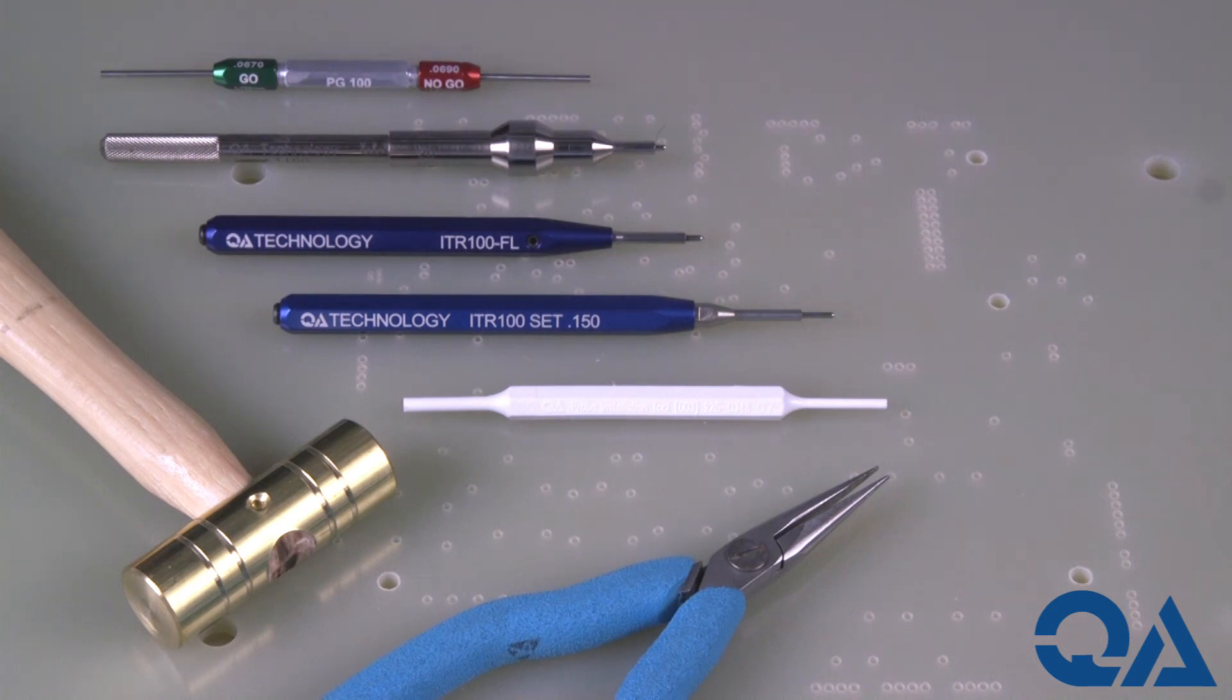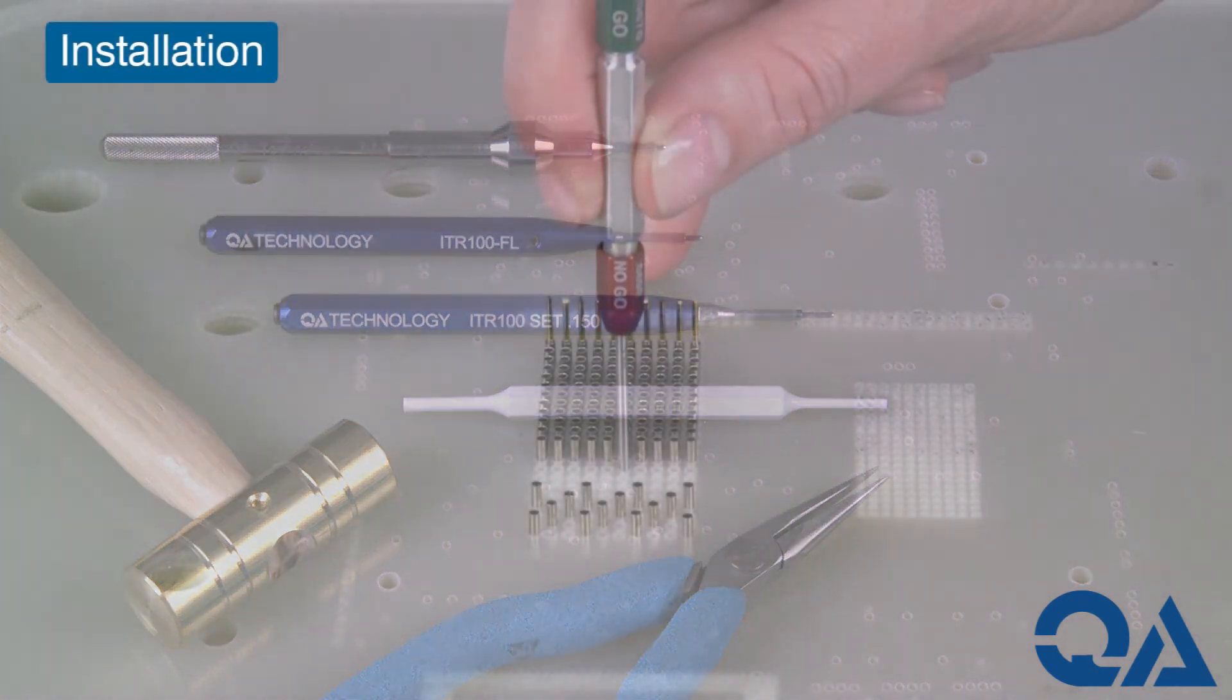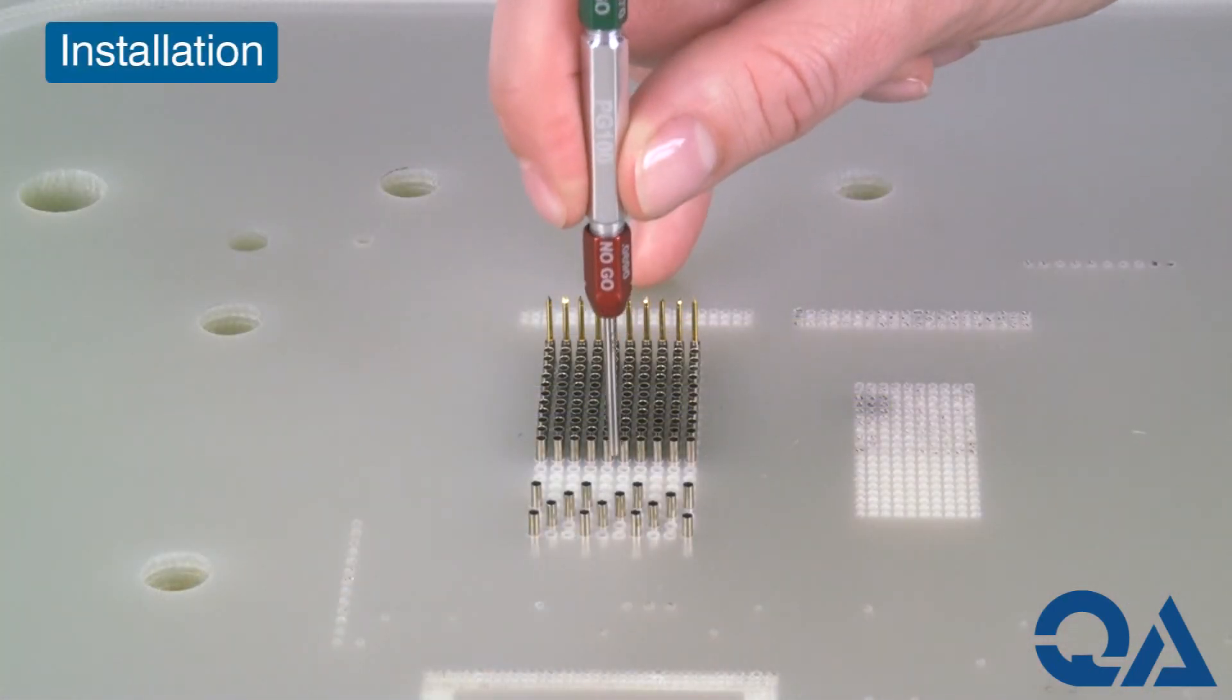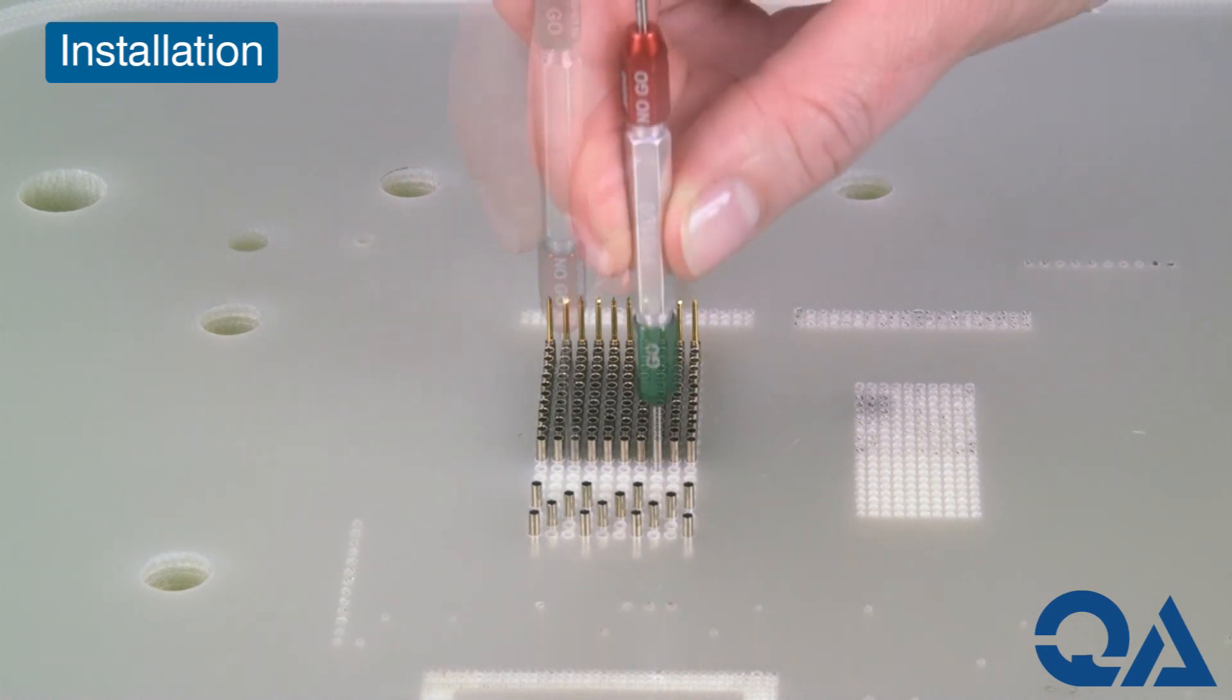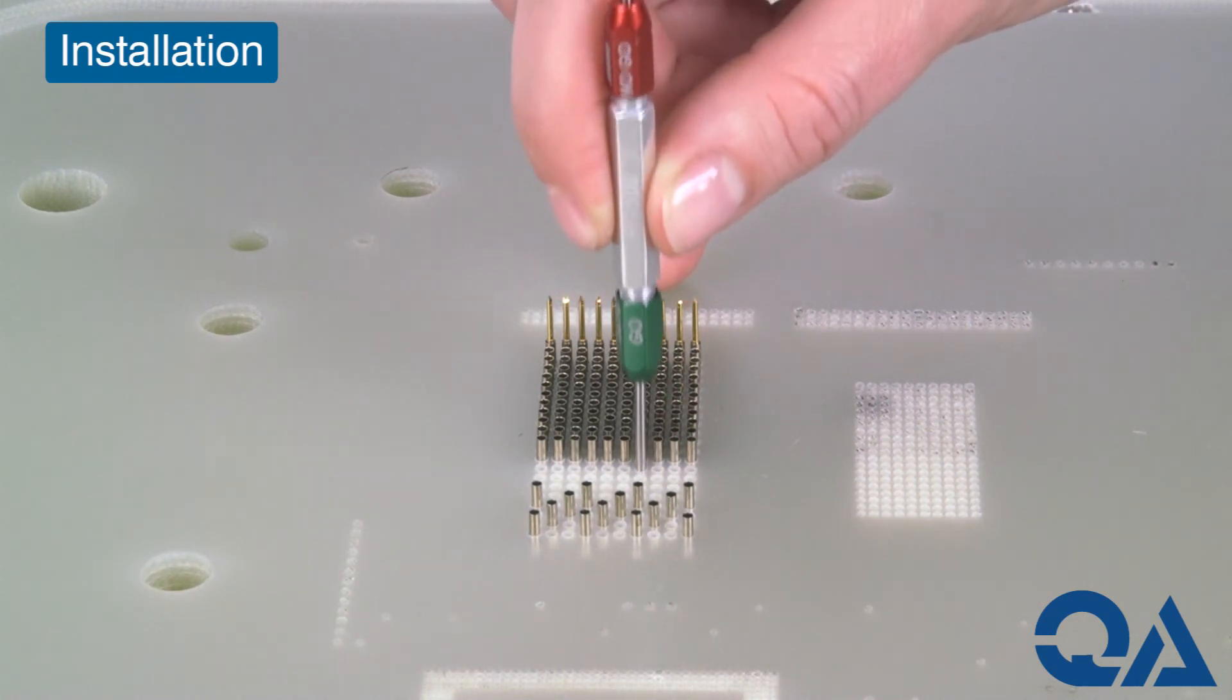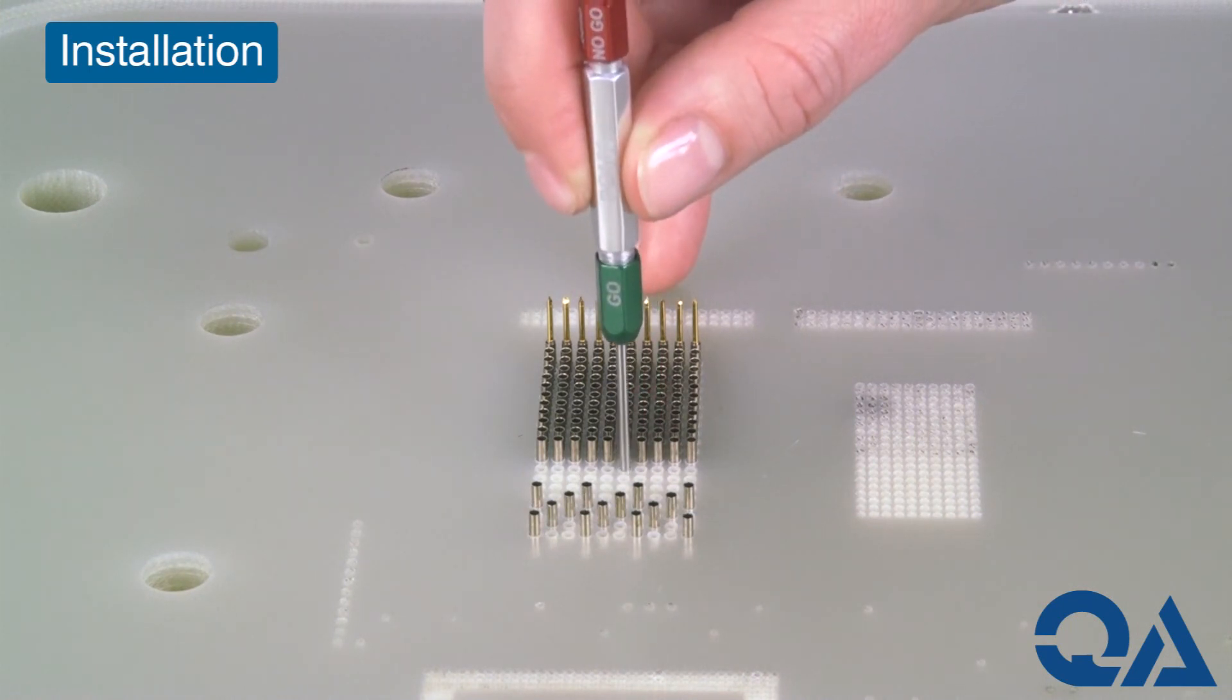Before installing a socket, check that the mounting hole is the correct diameter. QA's pin gauge makes it easy to verify the recommended hole size. The red side should not enter the hole, while the green side confirms the hole size is accurate and ready for the socket.